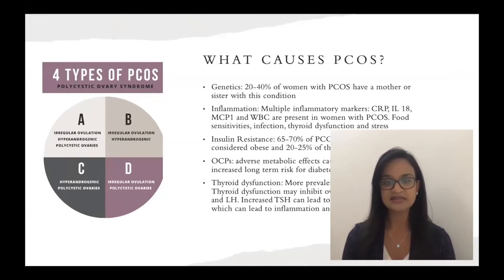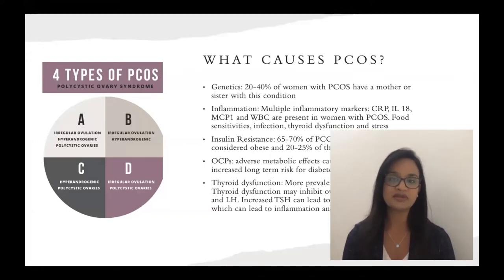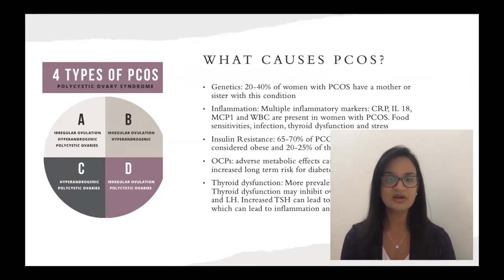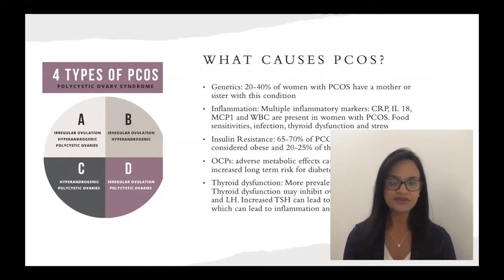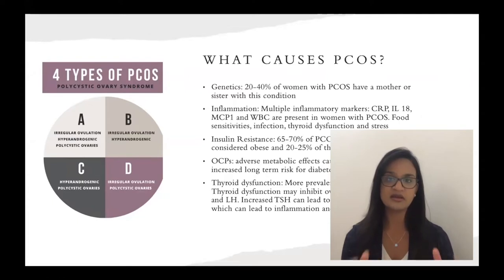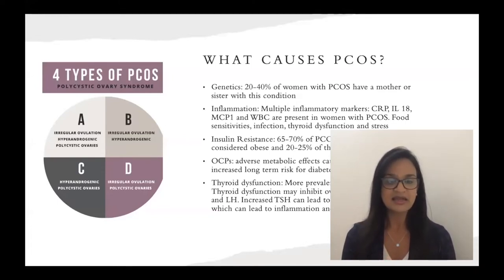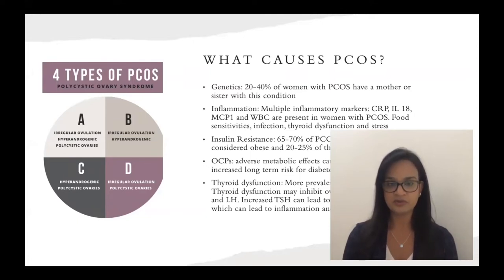Insulin resistance is tremendously significant in PCOS patients. 65 to 70% of PCOS patients have insulin resistance at some point in their disease. 70 to 80% are considered obese and 20 to 25% are considered lean. There is no one-size-fits-all for PCOS — we have to talk about the spectrum. There are actually four phenotypes or subclasses: the first presents with irregular ovulation, hyperandrogenism, and polycystic ovaries; the second has just hyperandrogenism and irregular ovulation; the third has androgenic features and polycystic ovaries; and the last has just irregular ovulation and polycystic ovaries with no hyperandrogenism.